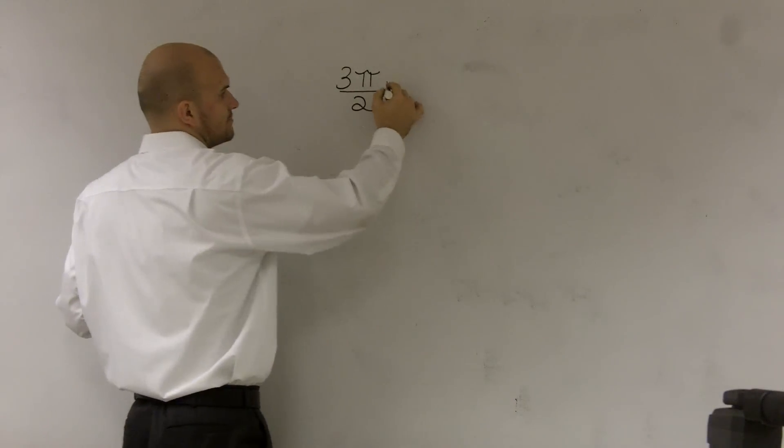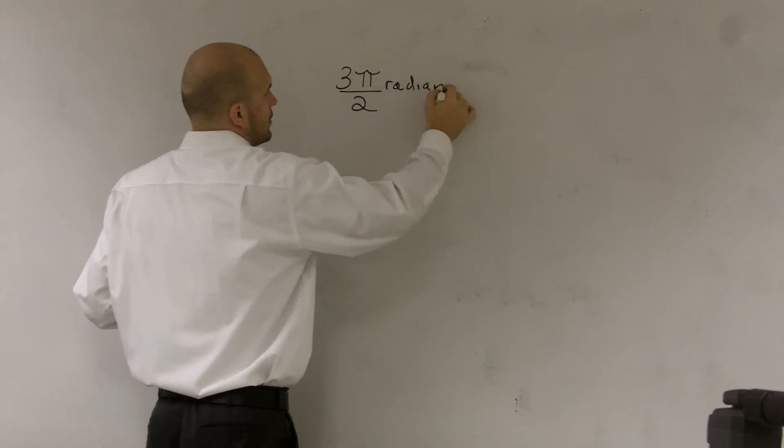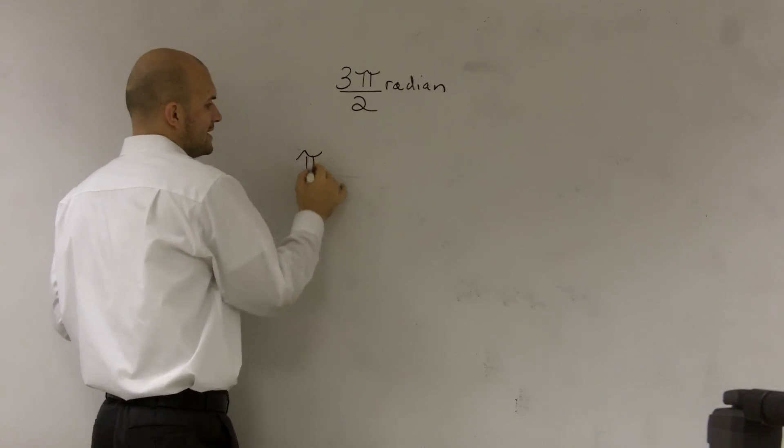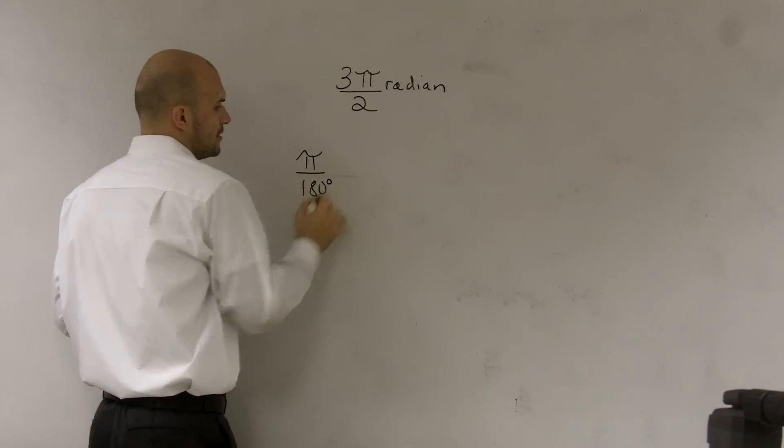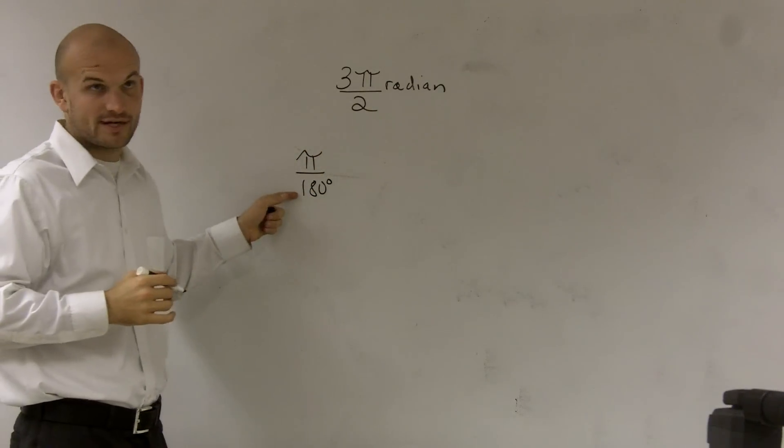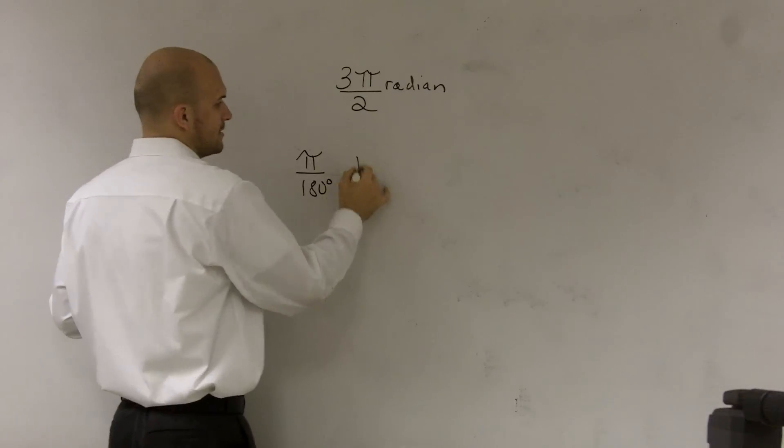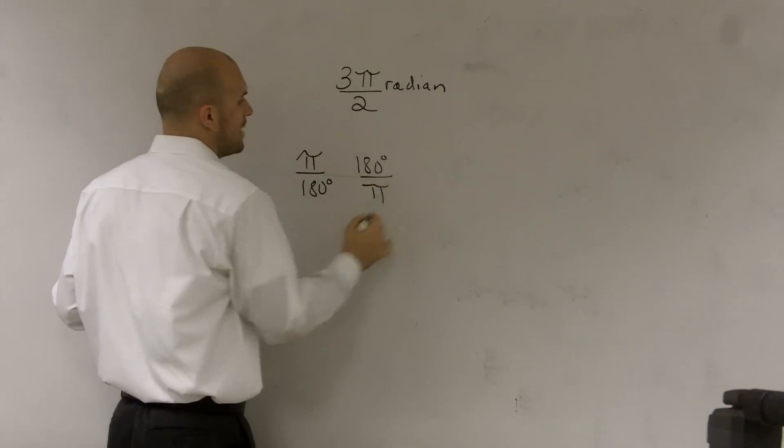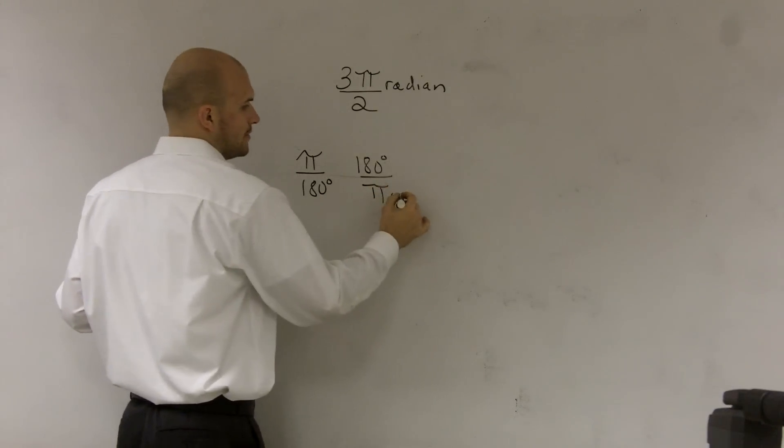Here I have a radian. We know that the ratio π is to 180. π radians is 180 degrees. But I can rewrite that and say 180 degrees is to π radians, right?